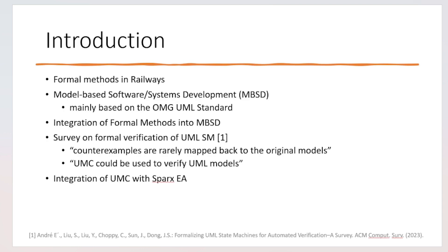The railway domain is safety critical. For the highest safety integrity level, SIL4, formal methods are highly recommended by standards like CENELEC. Formal methods help increase the safety of software systems by providing formal guarantees that certain desired conditions hold. They are also helpful to reduce costs, for example of maintenance.